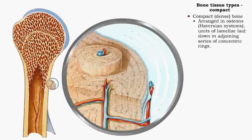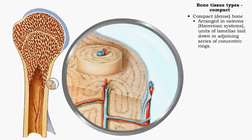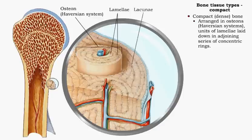Compact bone tissue is arranged in osteons, also known as Haversian systems. Osteons are formed where lamellae are laid down in a joining series of concentric rings.